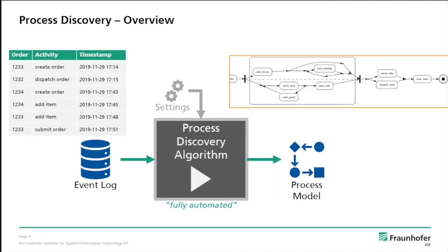So conventional process discovery works in the following way. We take event data as input, which captures the execution or multiple executions of our process. We feed this event data into our process discovery algorithm, which will then, in a fully automated fashion, discover or learn a process model, which we see here on the upper right side, that captures the behavior in the given event log. This is how process discovery works in most cases.